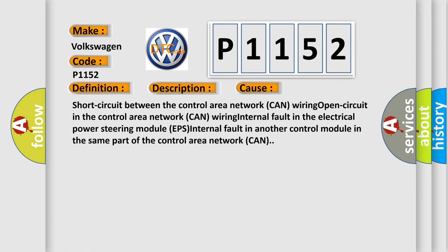Short circuit between the control area network CAN wiring, open circuit in the control area network CAN wiring, internal fault in the electrical power steering module EPS, internal fault in another control module in the same part of the control area network CAN.